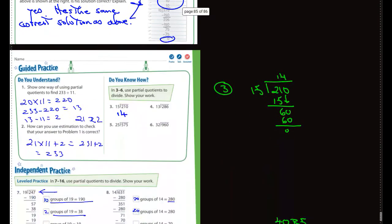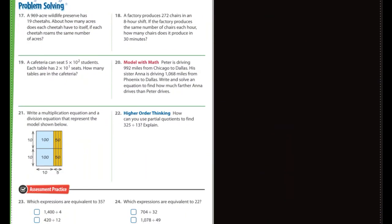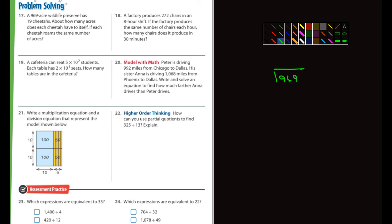All right. Let's go to the last page here. Let's look at one or two of these. Let's see here. Number 17. A 969-acre wildlife preserve has 19 cheetahs. About how many acres does each cheetah have to itself? So we have 969 being divided by 19. Let's see here. It does say about. You know what? That's a clue. That's a big clue right there. About how many acres. So we're not looking for an exact answer.